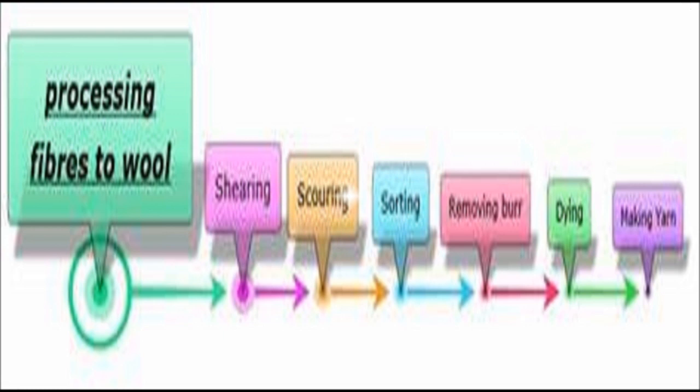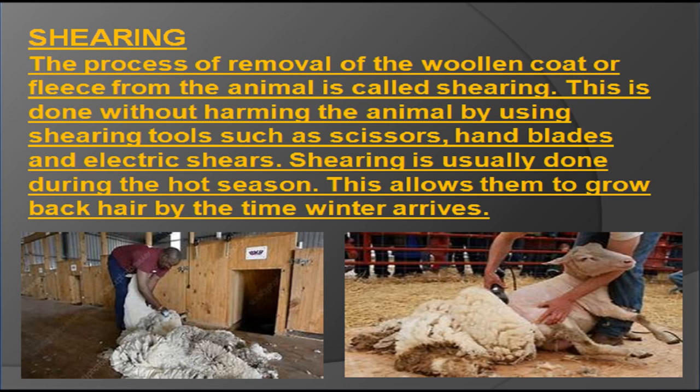Shearing and processing wool: The process of removal of the woolen coat or fleece from the animal is called shearing. This is done without harming the animal by using shearing tools such as scissors, hand blades and electric shears. This is usually done during the hot season, allowing the sheep to grow back hair by the time winter arrives. The amount of wool produced by one sheep varies from 1 to 3 kg.